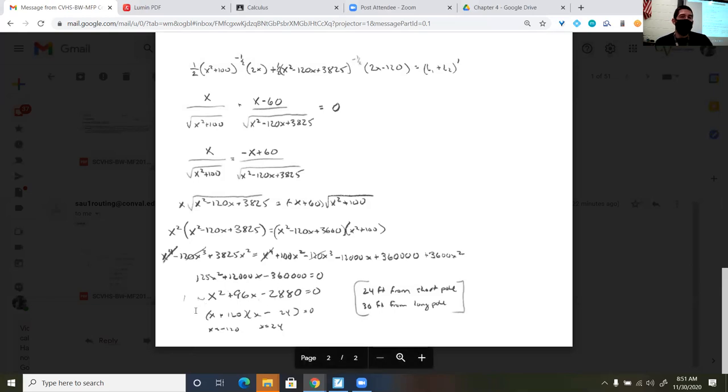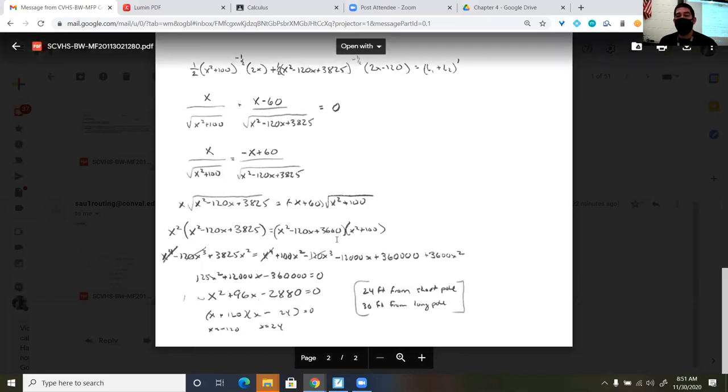And then at this point, you could either factor it. I just spent a little bit and said, alright, is there anything that would make sense? Or you can plug it into Desmos and see where the function crosses the x-axis. I got the two answers to being negative 120 and 24. Wouldn't make sense to have a negative distance. So I can conclude that x is 24.